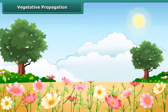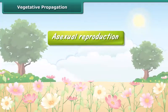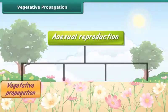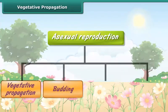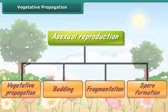Vegetative propagation. Different methods of asexual reproduction are vegetative propagation, budding, fragmentation, and spore formation. Let's discuss about them in detail one by one.